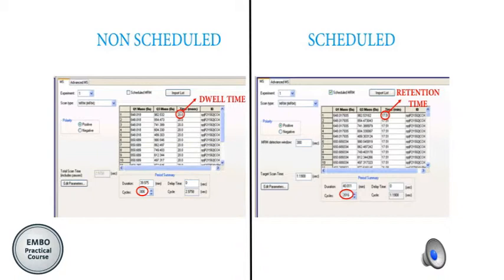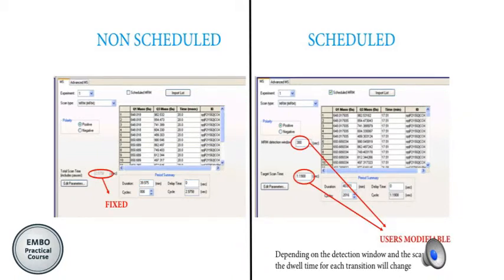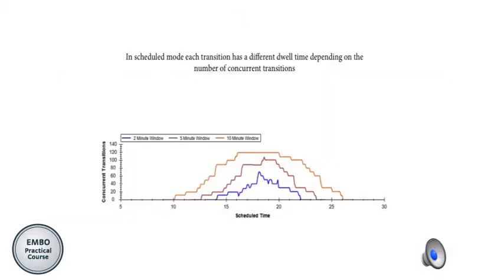In the case of scheduled MRM, instead of dwell time we enter the retention time and fix the scan time — for example a target cycle time of 1.2 seconds. At each moment in the chromatography the software calculates how many transitions are co-eluting and divides the available time among those transitions, so the dwell time changes from transition to transition.